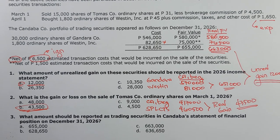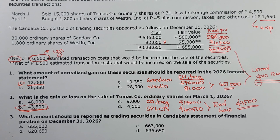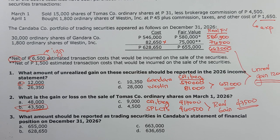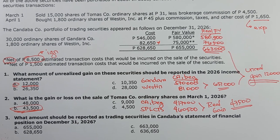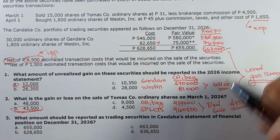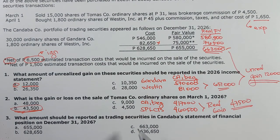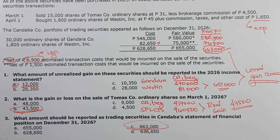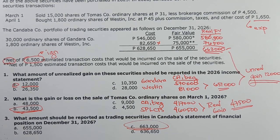Last question: What amount should be reported as trading securities in Candaba's statement of financial position? Fair value po ang ating subsequent measurement. Therefore, our final answer will be equal to 663,000. That is problem number one.